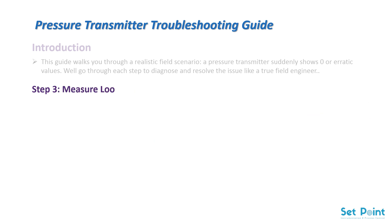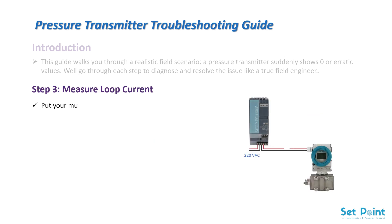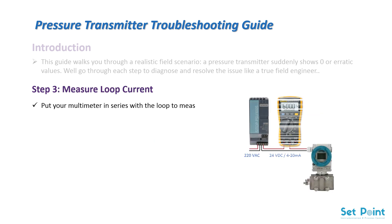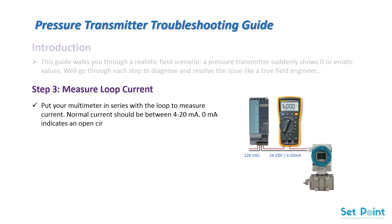Step 3: Measure loop current. Put your multimeter in series with the loop to measure current. Normal current should be between 4 to 20 milliamperes. 0 milliamperes indicates an open circuit; 20 milliamperes constant might mean overrange. Use this as a vital diagnostic indicator.